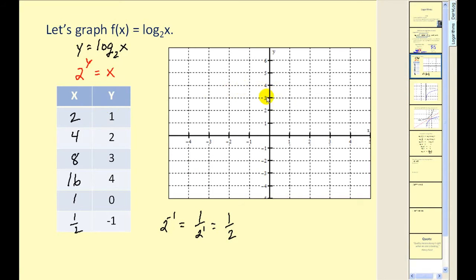Okay, let's plot these points. Two one, four two. The rest of these will be off the screen, but we can plot the point one zero and the point one-half negative one. And our graph would look something like this.